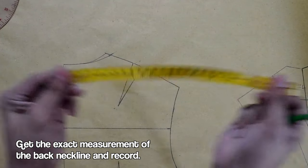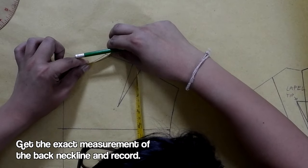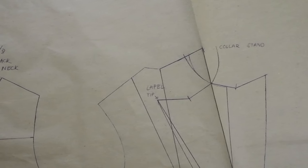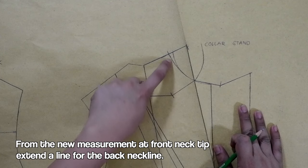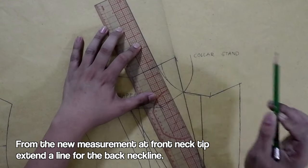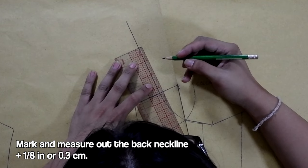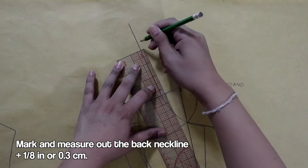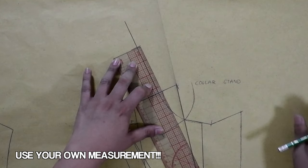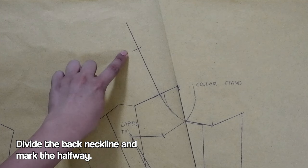Using your measuring tape or flex ruler, get the exact measurement of the back neckline and record it. So going back to the front neckline again, at the last mark we did, extend a line for the back neckline. From this new line, mark and measure out the back neckline measurement that we got earlier, plus 1/8 of an inch or 0.3 centimeter. By the way, use your own measurement for this one. Next, divide this line and mark it.